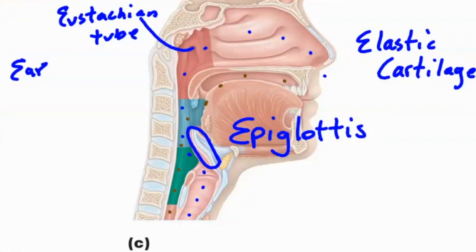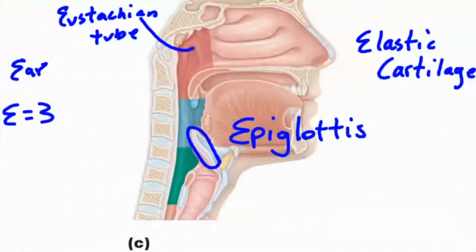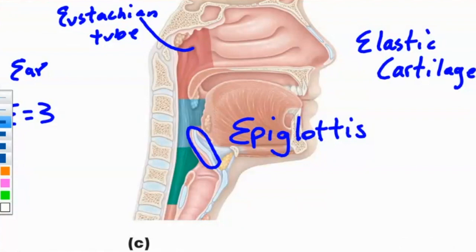There are basically three things in the body that are elastic cartilage: the Eustachian tube, the epiglottis, and your ear. And just like eosinophils, there are three of them and they all happen to have a name that starts with 'E' — that makes it really easy to remember. Back to the voice box — all of these little blue things are cartilage. This one right in the front, close to the thyroid, we call it thyroid cartilage. It forms your voice box — it is one of the major cartilages of your larynx.